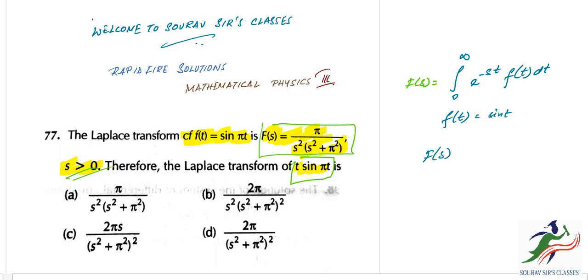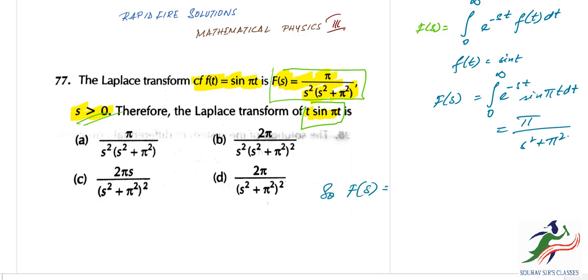So F(s) equals the integral from 0 to infinity of e^(-st) sin(πt) dt, and this is basically π/(s² + π²). So we have F(s) equal to 0 to infinity e^(-st) sin(πt) dt, and this will give us 2πs/(s² + π²).